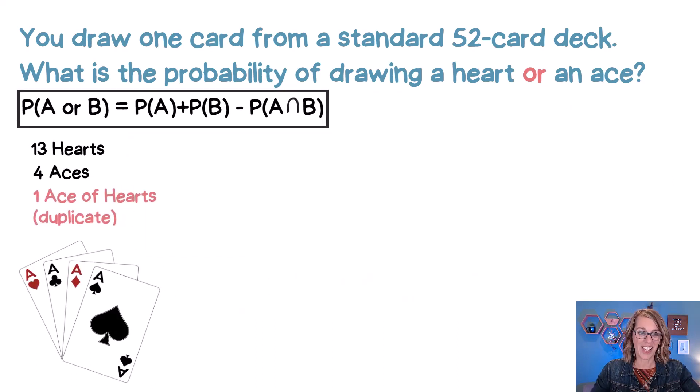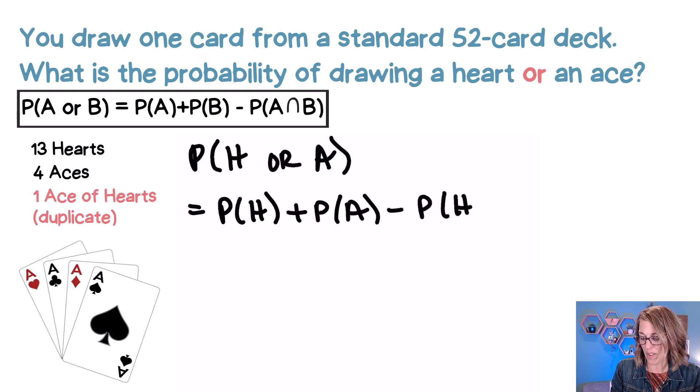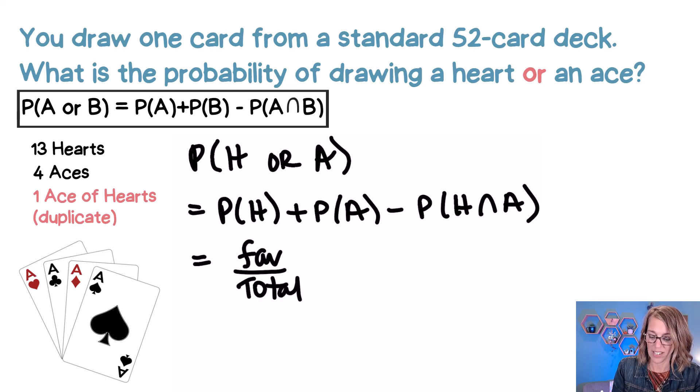Here's what it looks like as we put this one together. So I've got the probability of getting a heart or an ace. So that translates into the formula: probability of getting a heart plus the probability of getting an ace minus those duplicates, the probability of a heart and an ace. Now as I put this together, I'm going to use favorable out of total and I'm going to put this together as a single fraction. So I am drawing a single card out of 52.